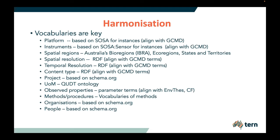The observable properties are the tricky ones. We have a wide list of classifiers, and even within observable properties we do multiple classifications. We try to align with the CF convention vocabularies, partly because a lot of the flux data uses the CF convention. So we align with them and reuse those vocabularies.